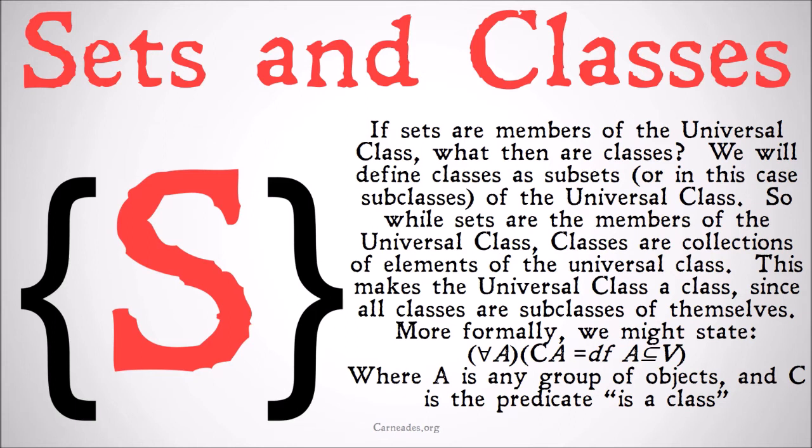This makes the universal class itself a class, since all classes are subclasses of themselves. Or more formally, we might state: for all A, A is a class is by definition that A is a subclass of V. Where A is any group of objects — again, group being very roughly defined — and C is the predicate 'is a class.'